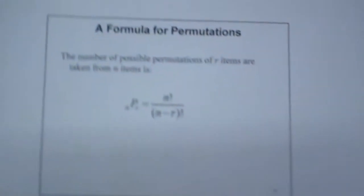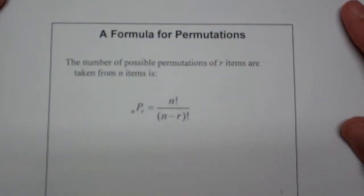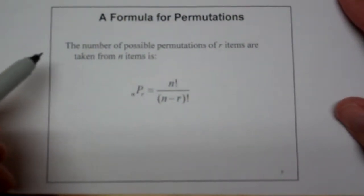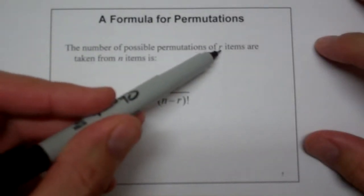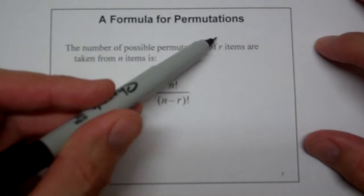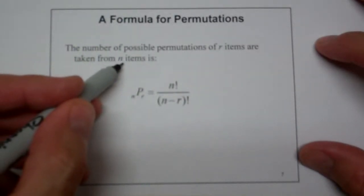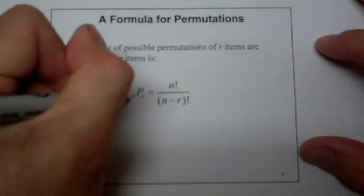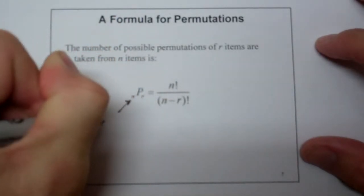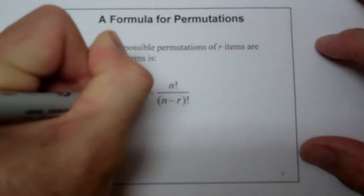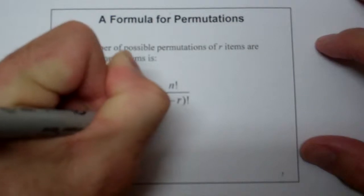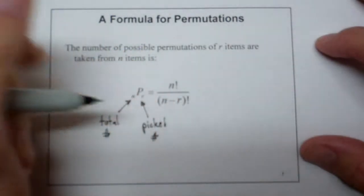Now, there's a formula for the permutation that actually uses the factorial. So what is that? The formula for the factorial is the number of possible permutations of r items, how many items I'm picking, taken from n items, the total number of items. So the n here is the total number, and the r here is the picked number.